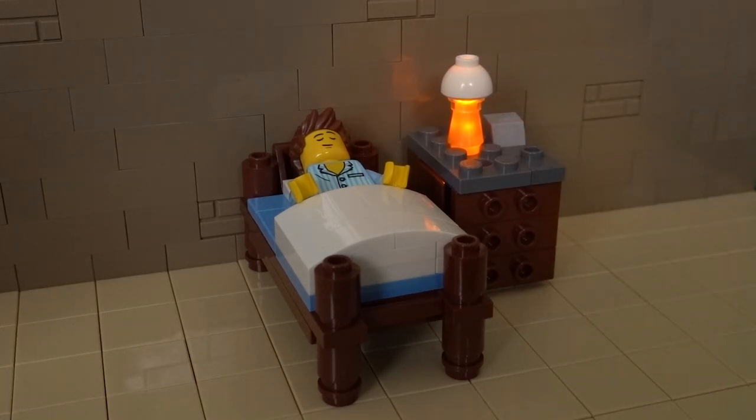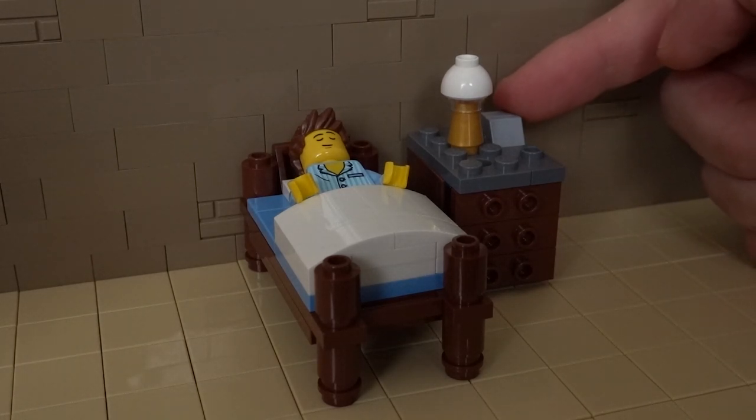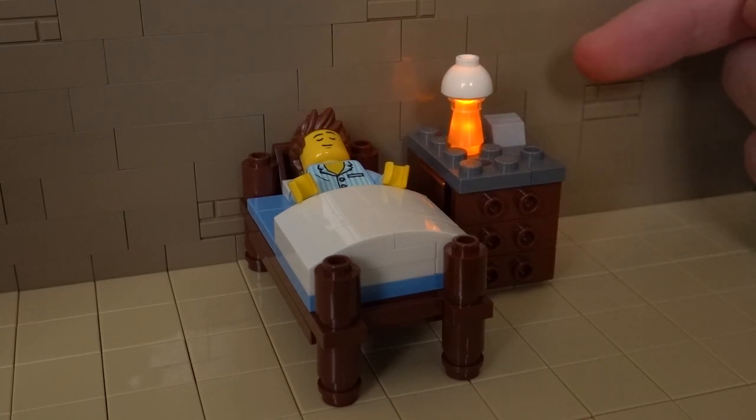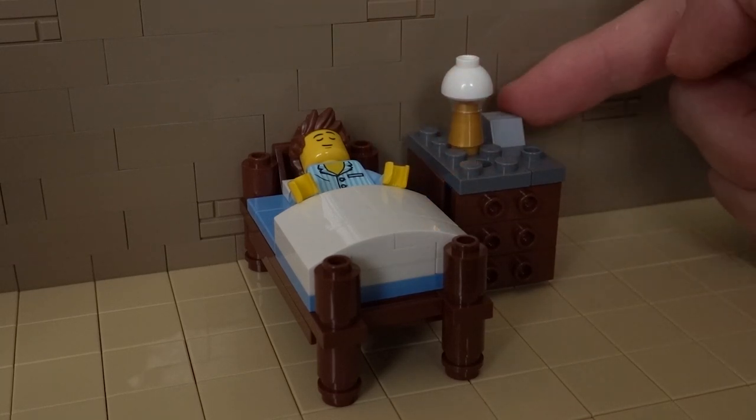What's up guys, it's me LEGO Paradise here, and today I'm going to show you how to build a working LEGO table lamp. This can be activated by pressing a switch on the table which toggles the light on and off.